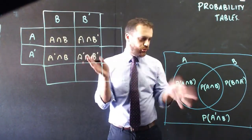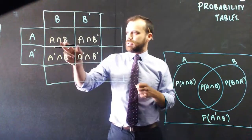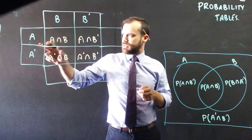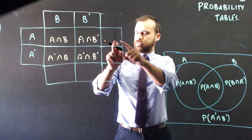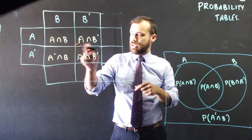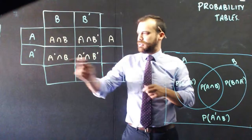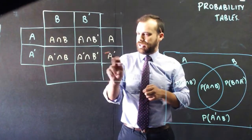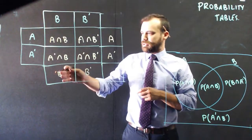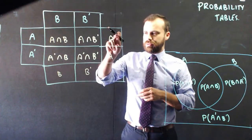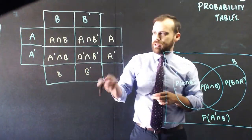If you look at the table and the Venn diagram, you can match all four regions up. Given the addition rule of probability, we can move along and say that P(A∩B) plus P(A∩B') gives us the probability of just A happening. Similarly, this column gives the probability of not A, this row gives the probability of B, and this gives the probability of not B. Finally, the probability of B plus not B equals one, and the probability of A plus not A equals one — either B happens or it doesn't, either A happens or it doesn't.